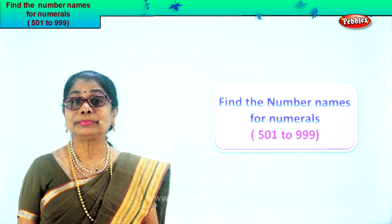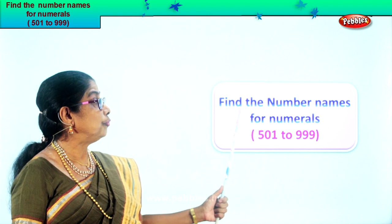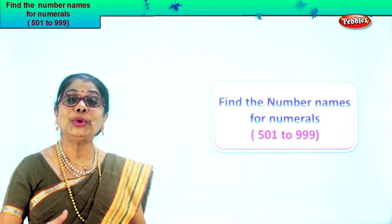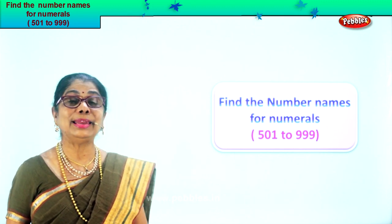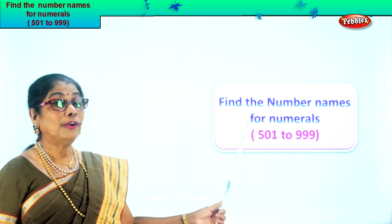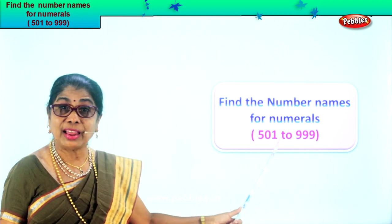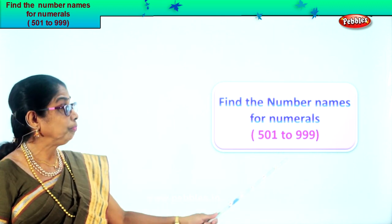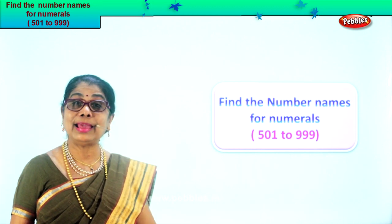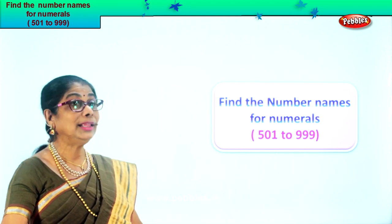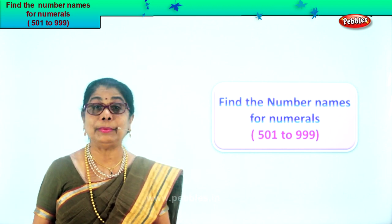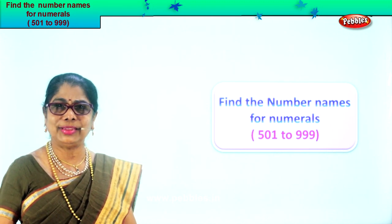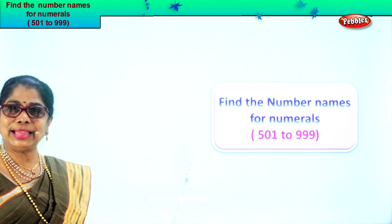Hi children, we are going to find the number name. Looking at the numeral, you're going to write the correct number name for numerals between 501 to 999. Any number between 501 and 999, if I give you the numeral, you should be able to write the number name. To write the number name, you should know the spellings of hundreds, tens, and ones. That's it. Very easy. Let's look at the exercise we have.